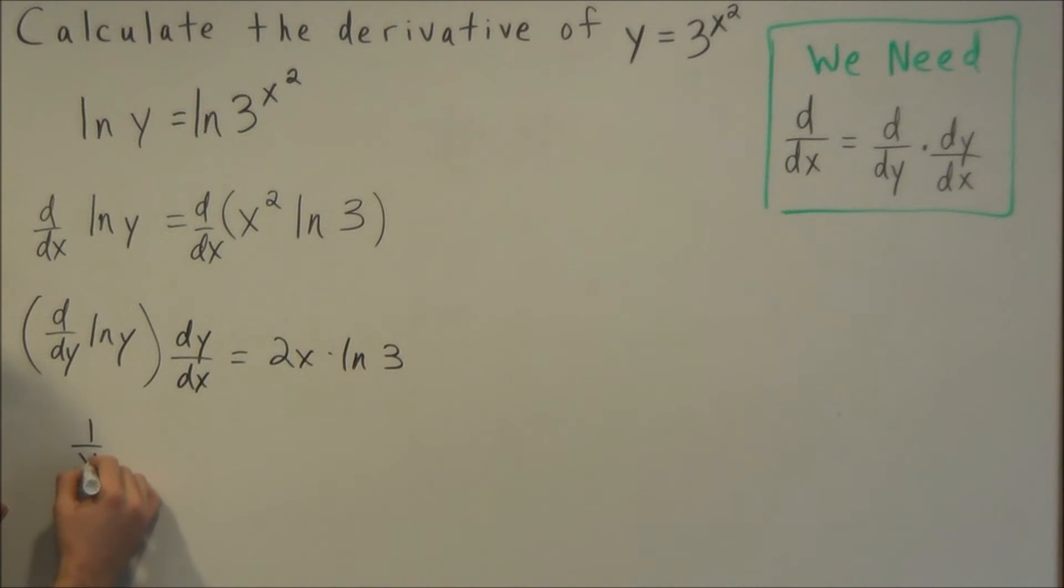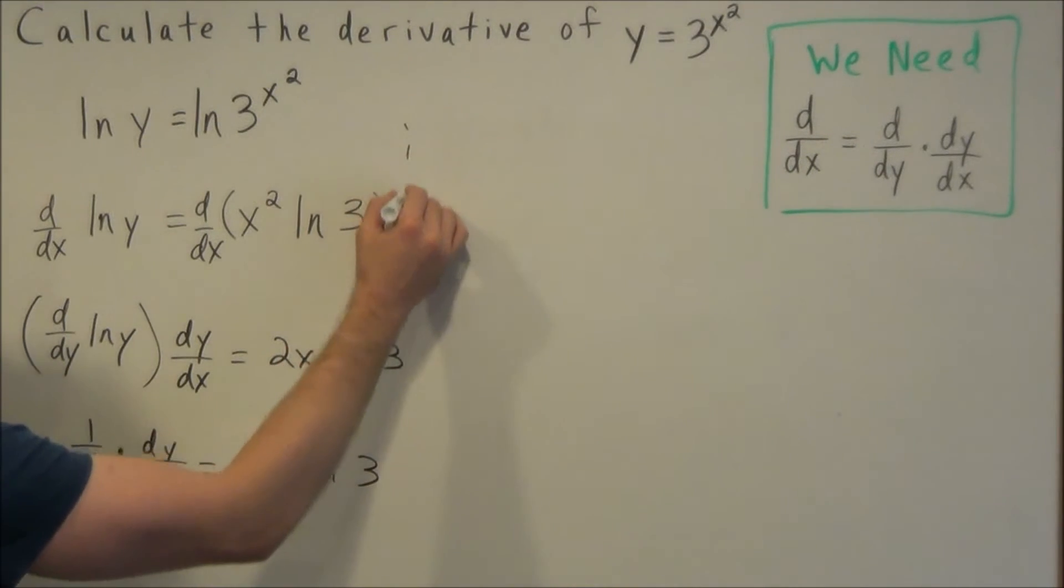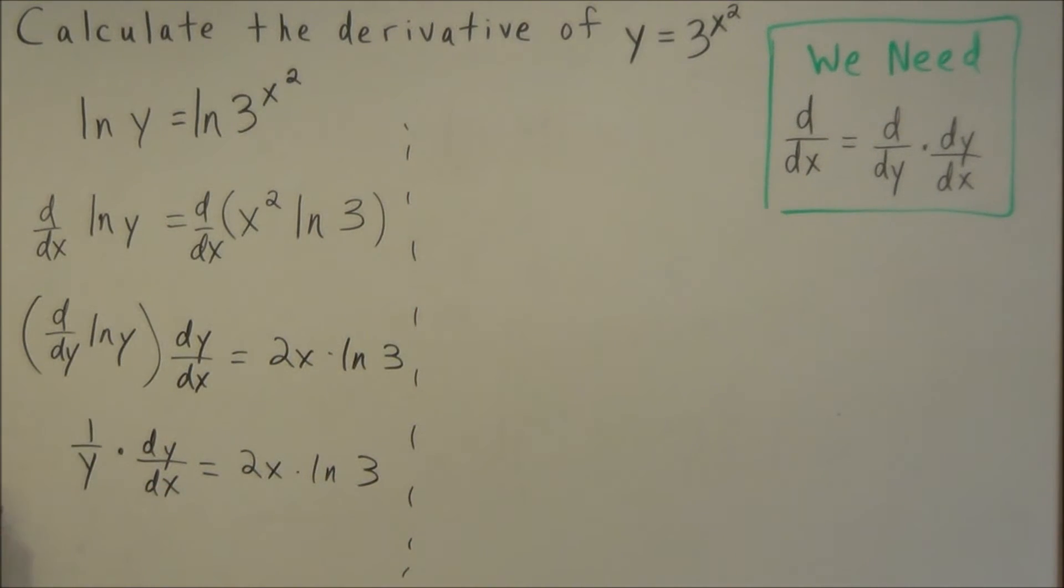Now we have 1 over y times dy dx equals 2x times natural log of 3. So then to solve for dy dx, that's what we want, we want the derivative, we could multiply both sides of this equation by y.